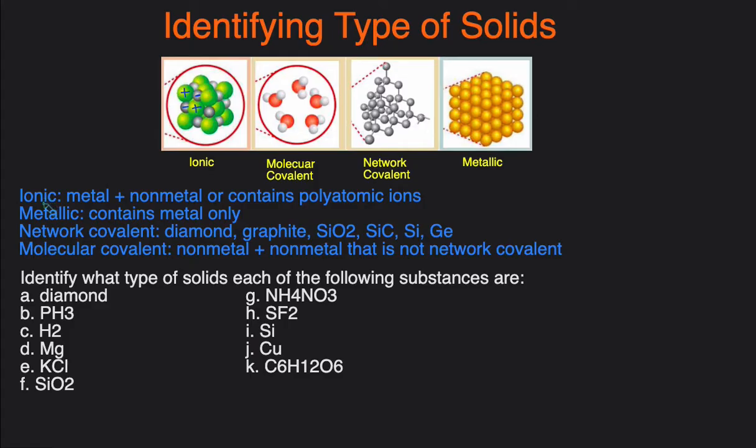So we'll start with ionic. Ionic solids contain metal and non-metal, or they contain a polyatomic ion. As you probably know, ionic solids are solids that contain positive ions or negative ions, cations, anions in a crystal lattice.